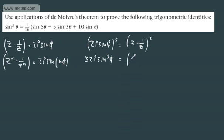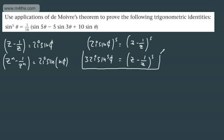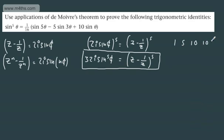And that's going to be equal to z minus 1 over z to the power of 5. I'm going to use the binomial expansion on the right-hand side. So we're looking at powers up to 5, and the coefficients are 1, 5, 10, 10, 5, and 1.